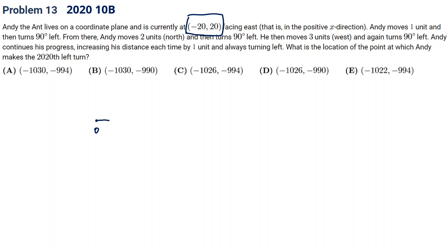And then in the positive x direction, facing east. Andy first moves 1 and then turns 90 degrees left, going north. And 2 units up.